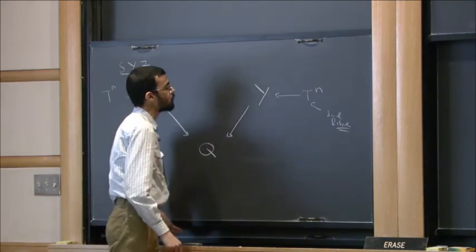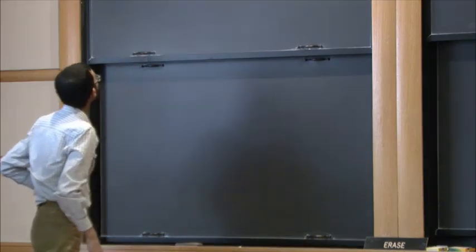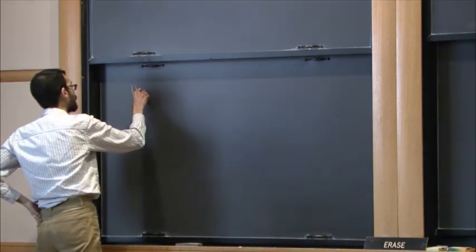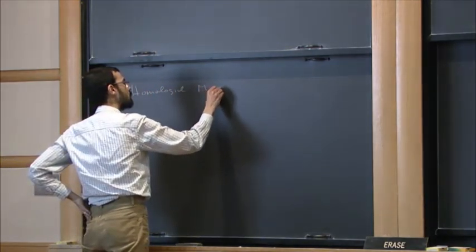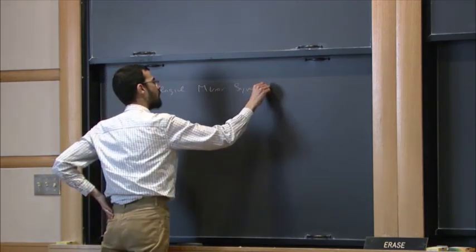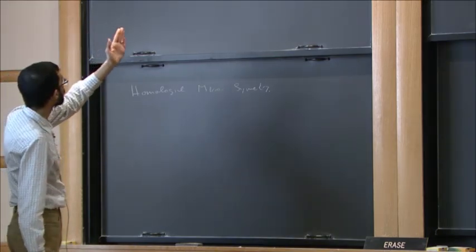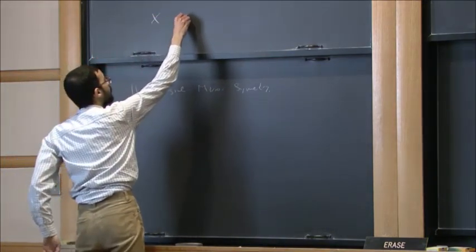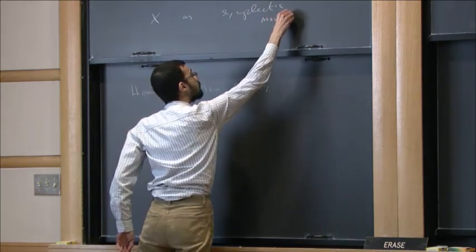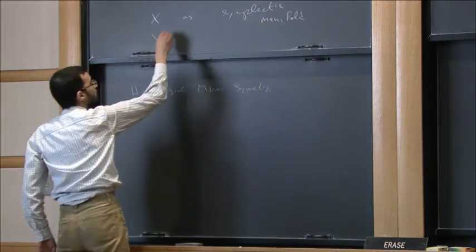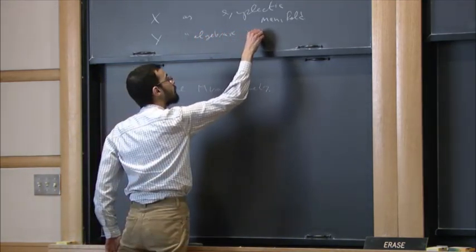So that's the picture for Strominger-Yau-Zaslow. The other picture is Kontsevich's homological mirror symmetry. That says that in this case, X and Y — let's focus in one direction — we'll think about X as a symplectic manifold, and Y as some sort of algebraic variety, even though we'll see later it's not necessarily an algebraic variety.